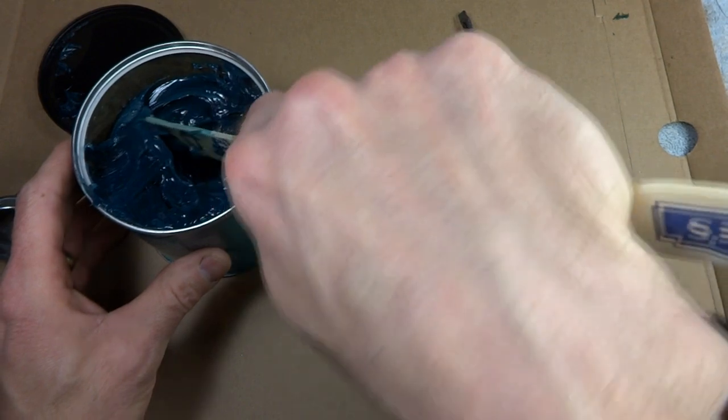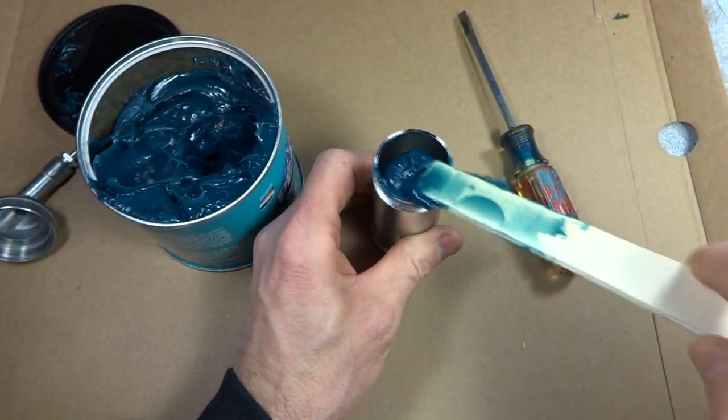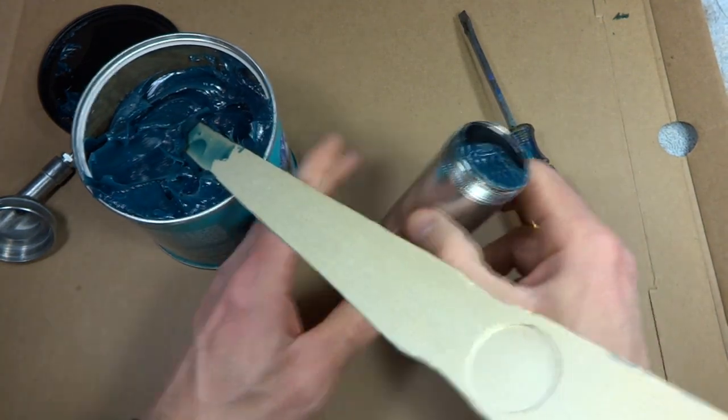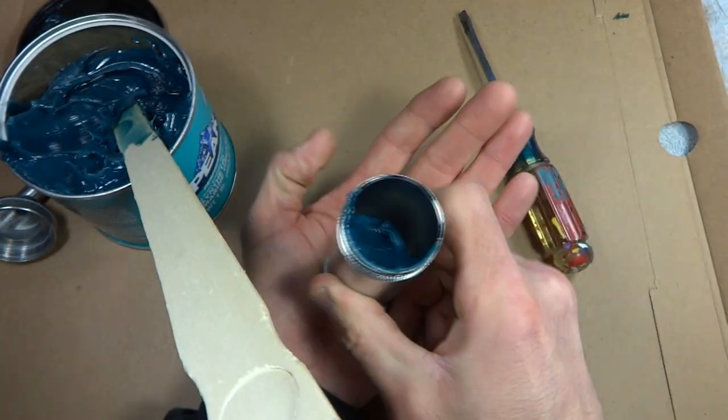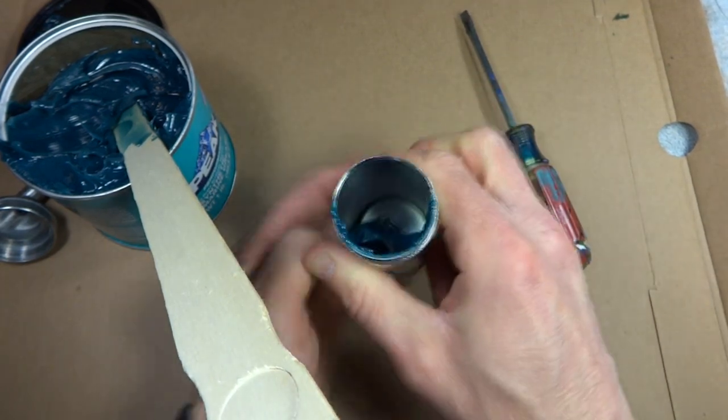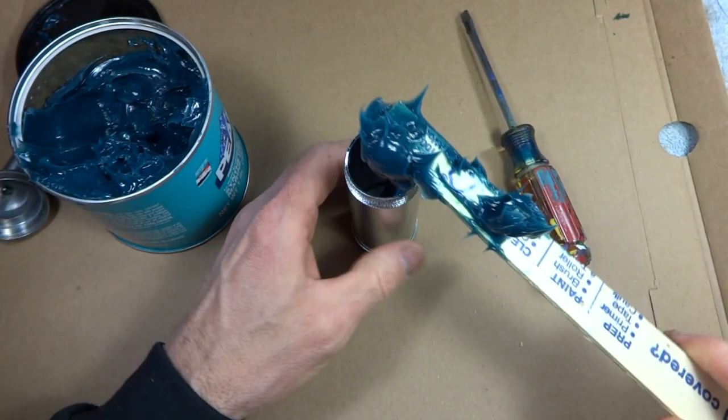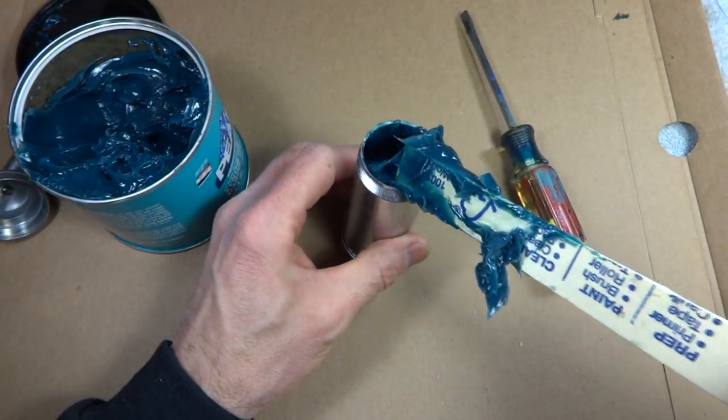Put some grease in there, and then as you go, you want to be tamping it down so the grease goes down. You want to try to minimize or get rid of any air pockets in there.